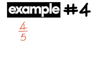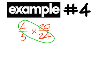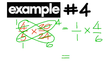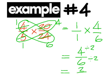Example 4 is 4 over 5 times 20 over 24. That would be a big multiplication, so you may want to cross-cancel first. 4 goes into 4 once and into 24 six times. 5 goes into 5 once and into 20 four times. So what you really have is 1 over 1 times 4 over 6. Multiply left to right to get 4 over 6. 2 goes into both, so divide by 2 to get 2 over 3 for the final answer.